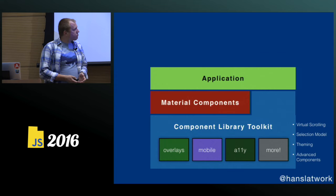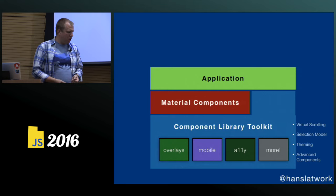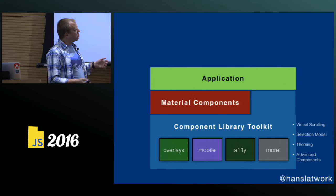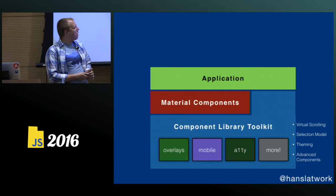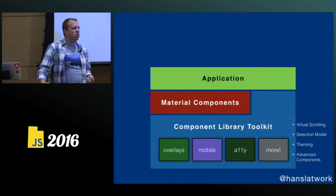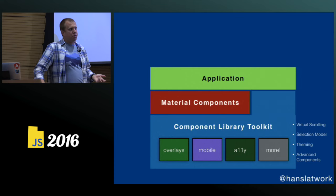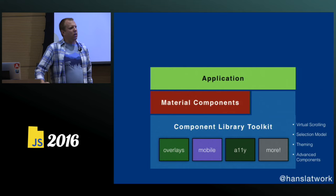We want to support much more: virtual scrolling to speed up scrolling over huge amounts of data, huge tables, huge pages, selection model, theming if you want to change theming in your app, and of course more advanced components. Stuff like rich text editing — building a rich text editor requires a lot of stuff that's not just a component, and we can provide tools to help you do that. We're also planning to have a text editor and data table map components in the future.